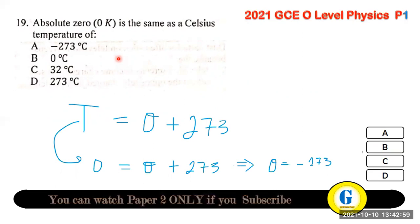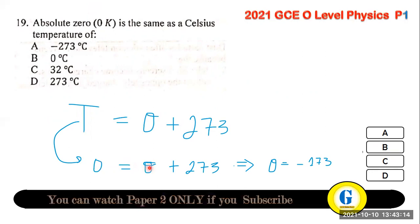Question 19: absolute zero in Celsius. Absolute zero is 0 kelvin. Using the formula T(K) = T(°C) + 273, substituting 0 K gives T(°C) = −273°C. So absolute zero is the same as −273 degrees Celsius.